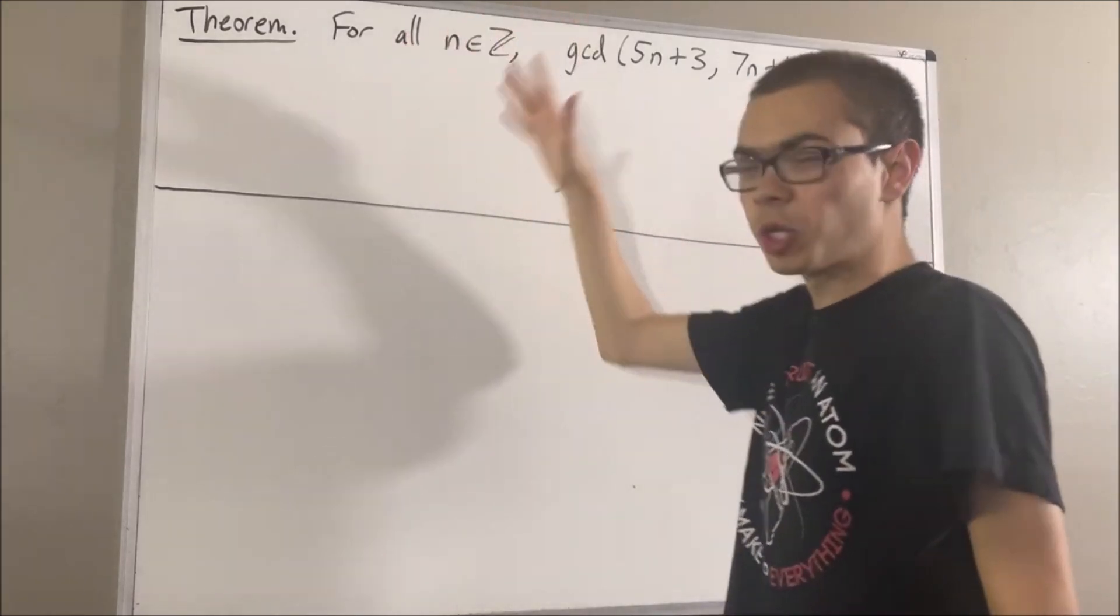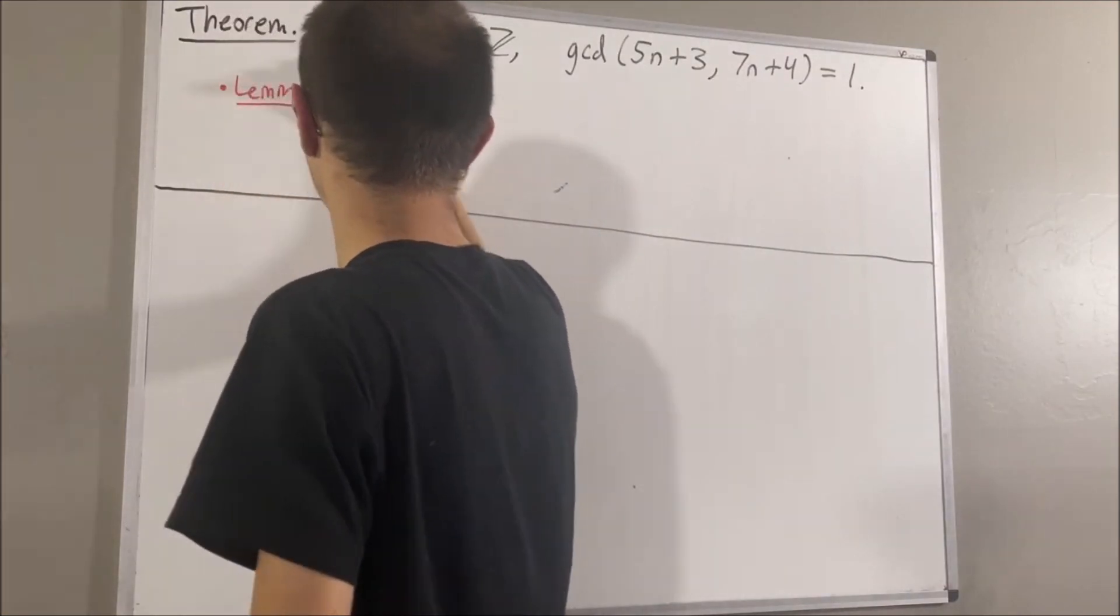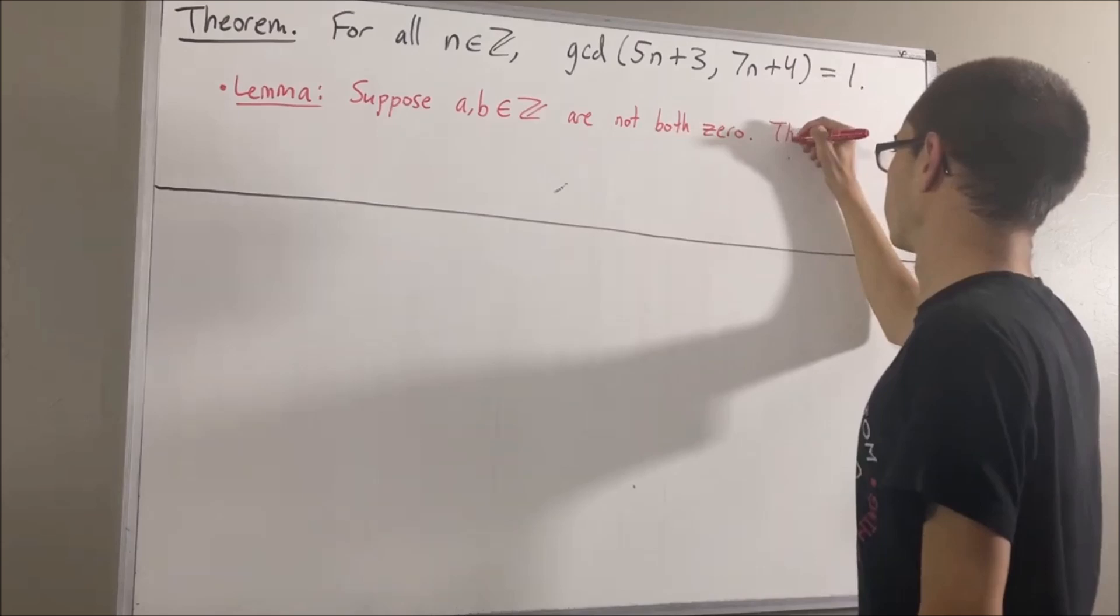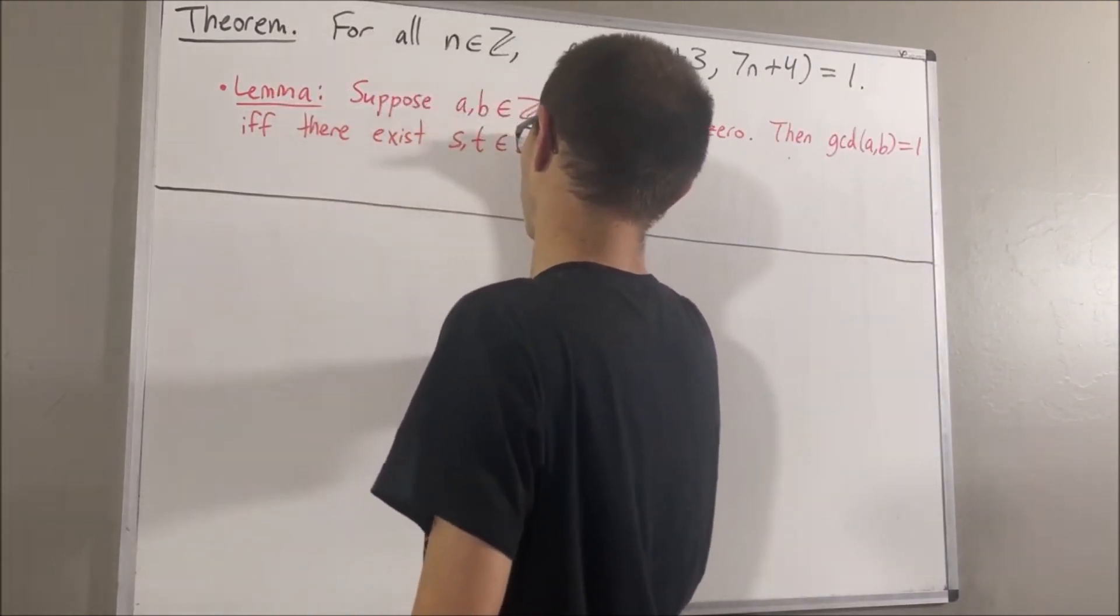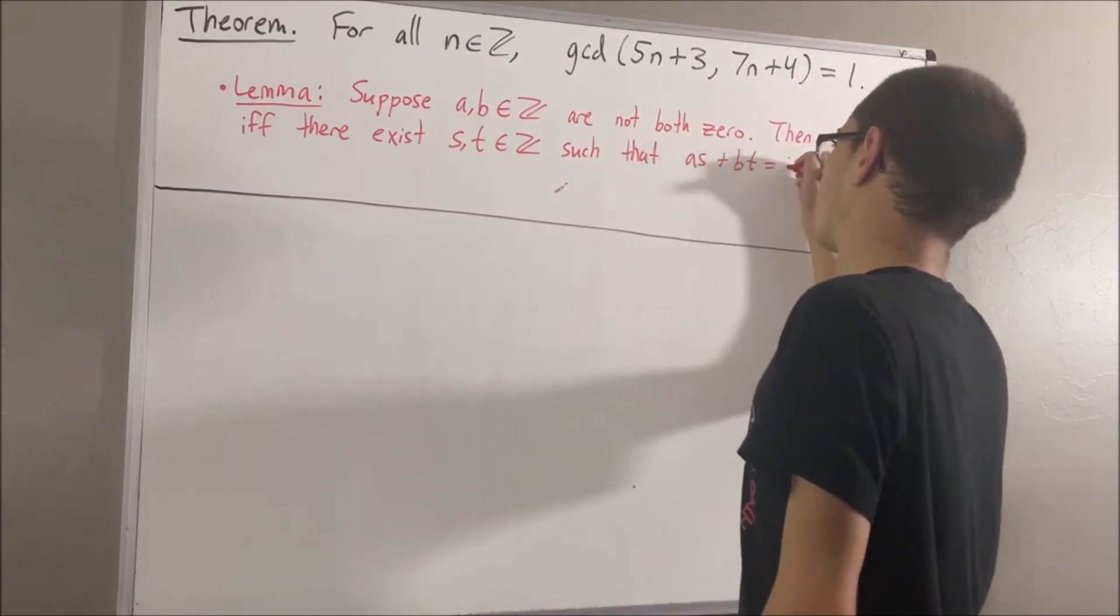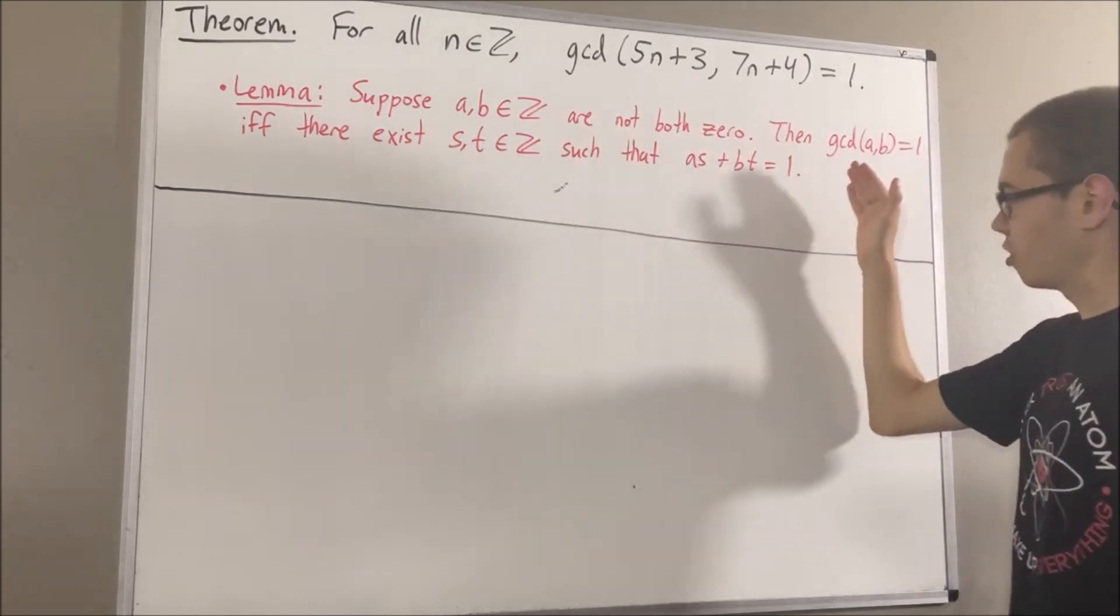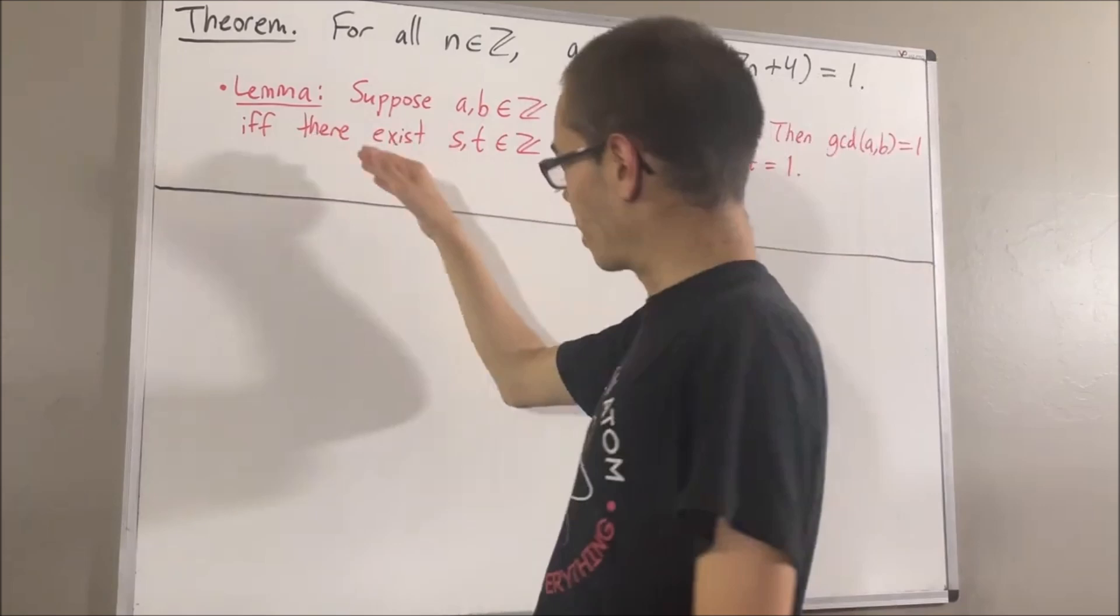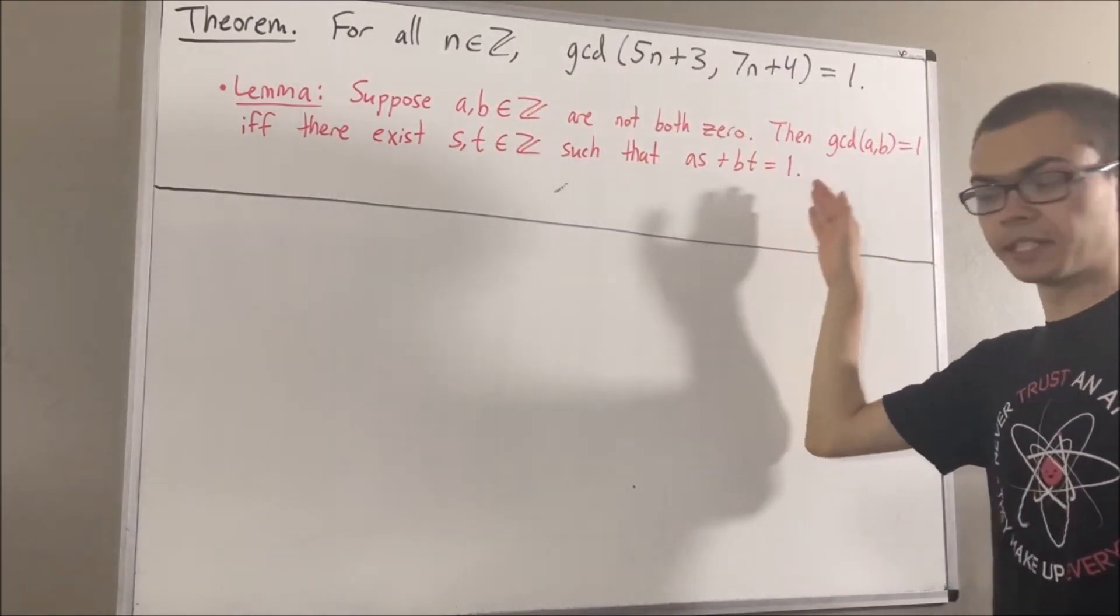Now, in proving this theorem, we are going to use the following preliminary result. Suppose a and b are integers that are not both 0. Then, the greatest common divisor of a and b is equal to 1, if and only if there exist integers s and t such that as plus bt is equal to 1.